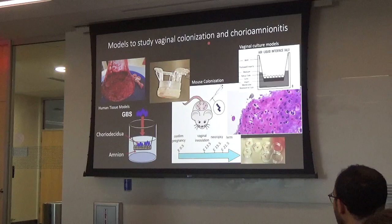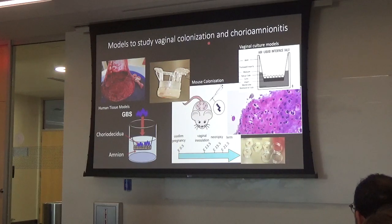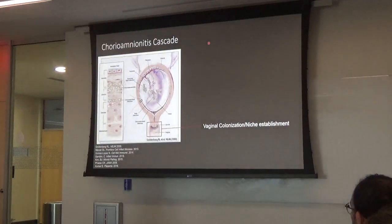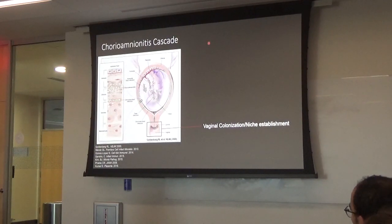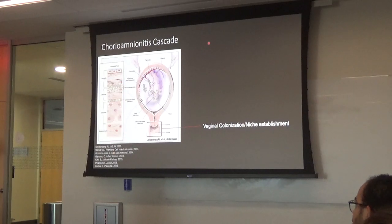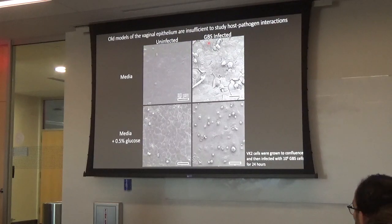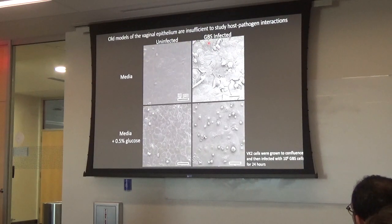Now let's talk about different models for studying host-pathogen interactions. Starting really basic — vaginal colonization: we have bacteria and a vaginal epithelial cell. The traditional cell culture model is that we grow cells in culture, in some type of plastic dish with growth media containing nutrients, and then add our pathogen to see what happens. These are immortalized epithelial cell lines called VK2 cells, which grow into a nice cobblestone appearance with cells all connected to each other.